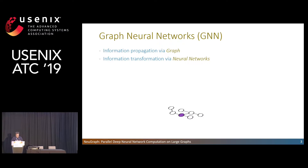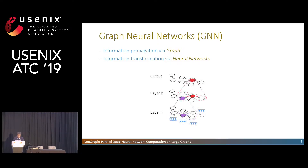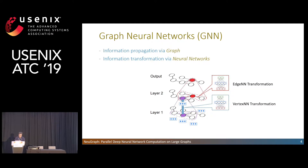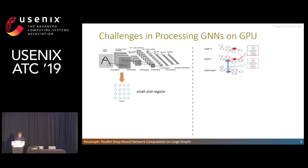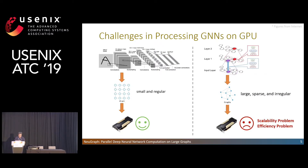GNN aggregates information following the graph structure. Specifically, each vertex or edge in the graph can be associated with a set of data and its features. A GNN can consist of multiple layers, with iterative propagation conducted layer by layer over the same graph. At each layer, the vertex or edge features are transformed and propagated along edges, and then aggregated at the target vertices to produce new features for the next layer. Traditional GNNs have small and regular grid structures, which is friendly to GPUs. However, in GNNs, graphs are large, sparse, and irregular, causing scalability and efficiency problems.